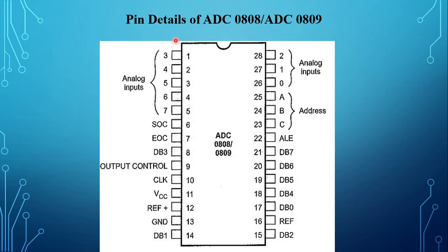After at least 50 nanoseconds, this address must be latched. This can be achieved by sending the ALE signal. After another 2.5 microseconds, the start of conversion signal must be sent high and then low to start the conversion. To indicate completion of conversion, ADC activates the end of conversion (EOC) signal. The microprocessor system can read the converted data through the data bus by enabling the output enable signal after EOC is activated.